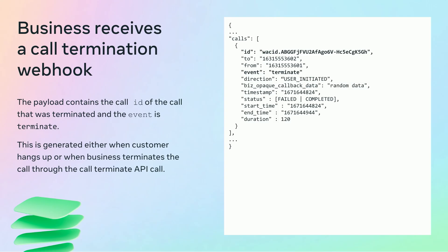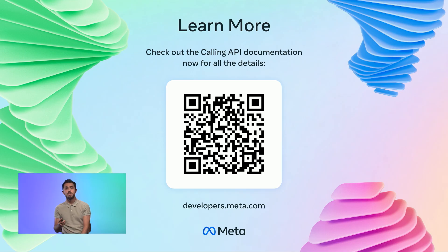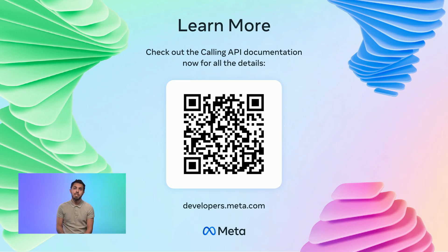This also finishes the technical overview of the WhatsApp Business Calling API on Cloud API. After learning all of this, you are ready to start its implementation. If you want to learn about other features such as calls deep links, DTMF tones, and how to use the SIP protocol for signaling, check out the QR code for all the details on the developers.meta.com website. Thanks for watching!